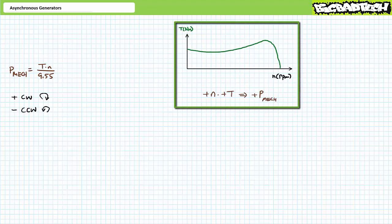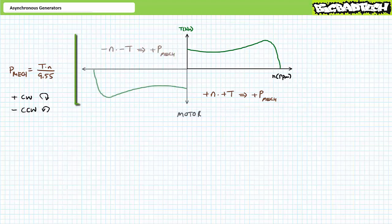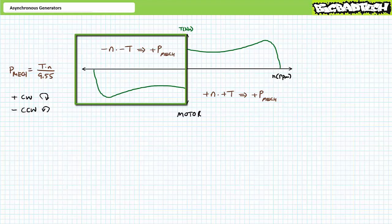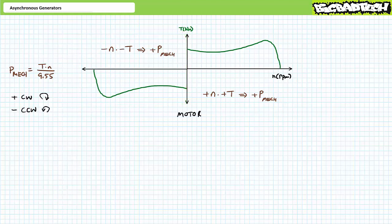Consider a speed-torque profile of a motor rotating in the positive clockwise direction producing positive clockwise torque — positive times positive yields positive mechanical power output. Similarly, a motor rotating in the negative counterclockwise direction producing negative counterclockwise torque: negative times negative yields positive mechanical power output. In summary, motors always produce torque in the direction of rotation and always yield positive mechanical power output. Given this power does not come from nowhere, a motor consumes positive electrical power input and produces an equal amount of positive mechanical power output minus losses.